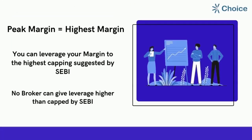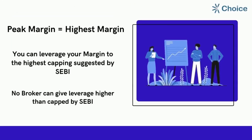Peak Margin System, as the name suggests, means the highest margin usable for intraday trades, which means you can leverage your margin available with broker to the highest capping suggested by SEBI.